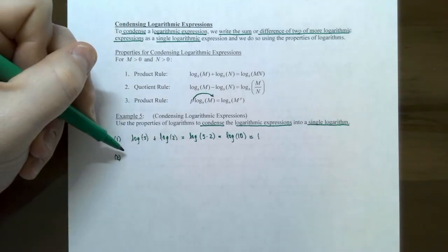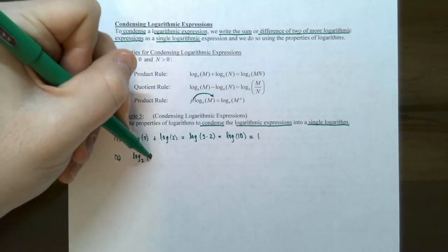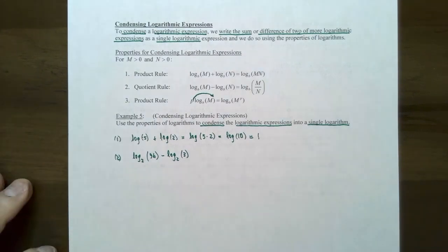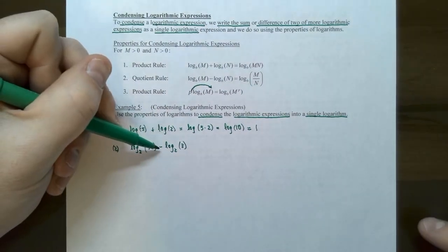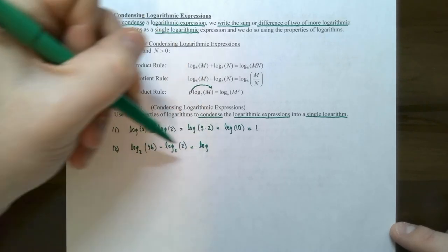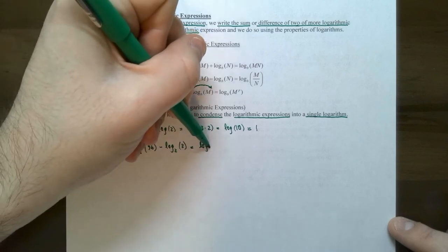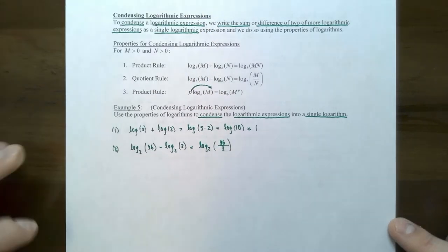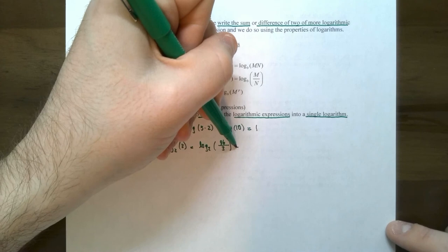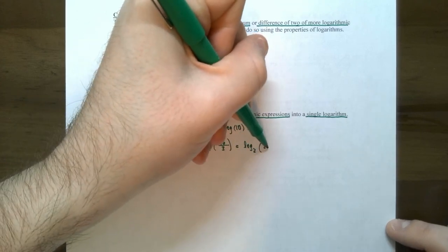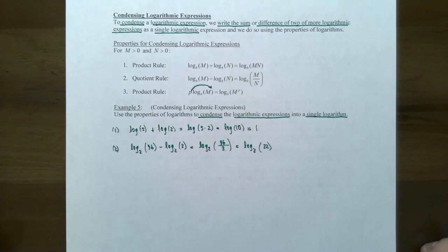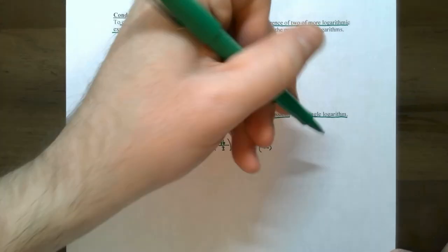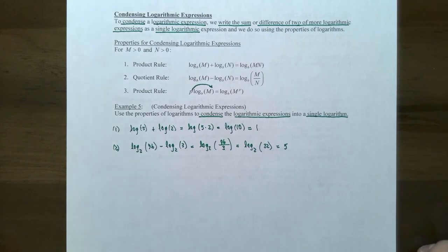Number two: log base two of ninety-six minus log base two of three. There's a subtraction between the logarithms, so use the quotient rule — divide the arguments: ninety-six divided by three equals thirty-two. So this becomes log base two of thirty-two. What is the exponent on two that gives thirty-two? It's five. So this simplifies further, all the way to five.